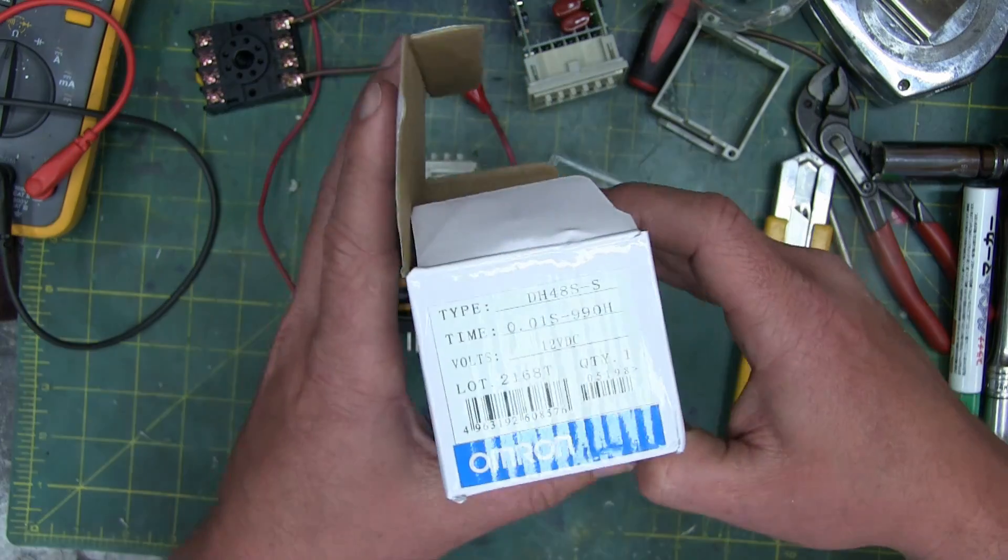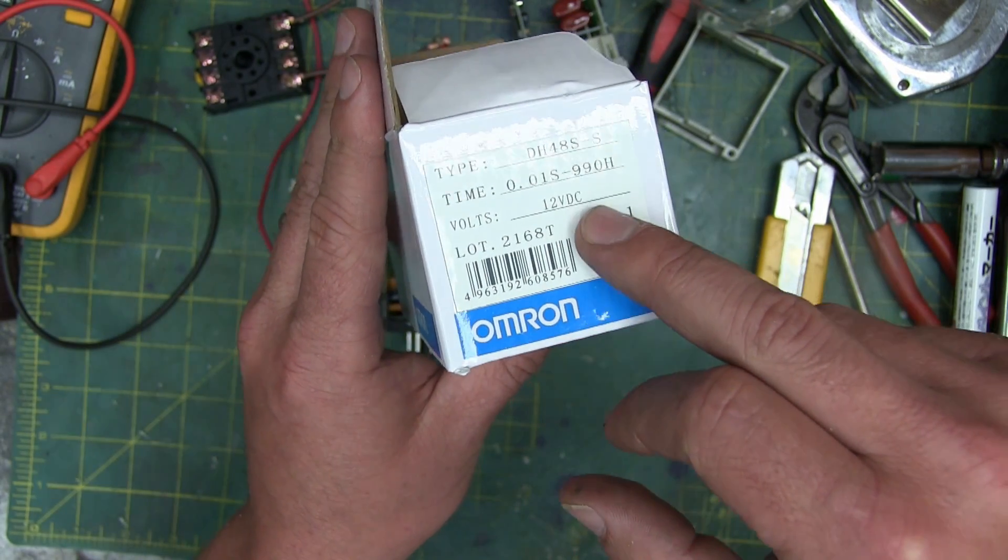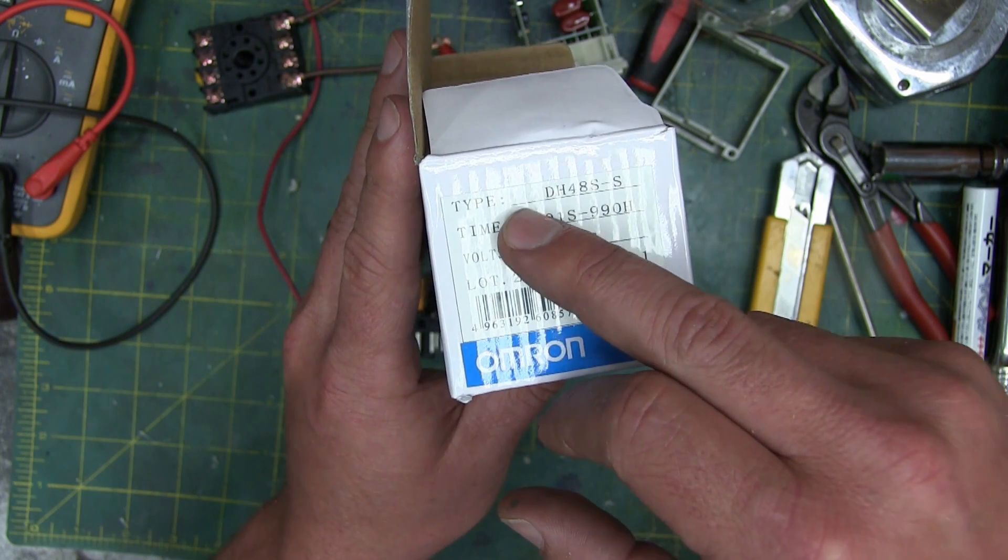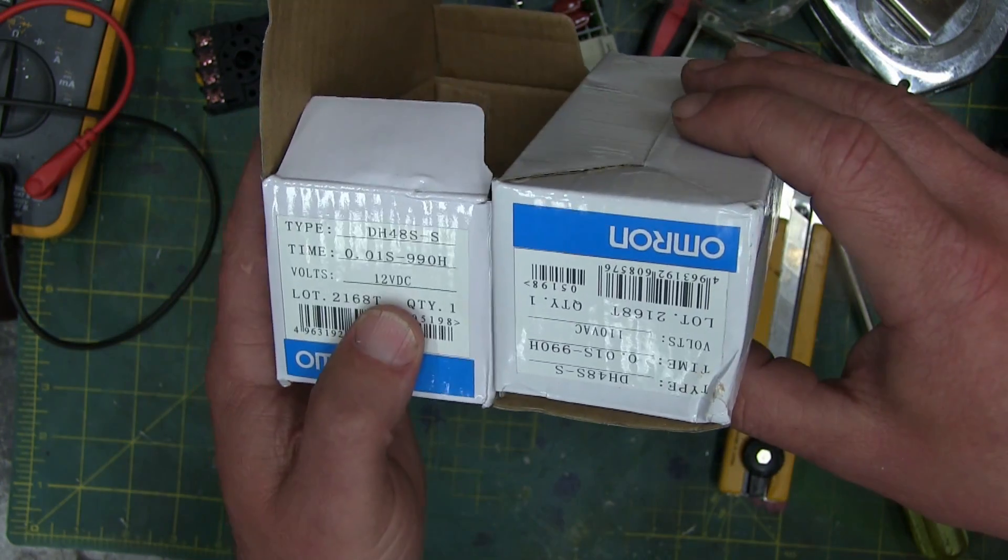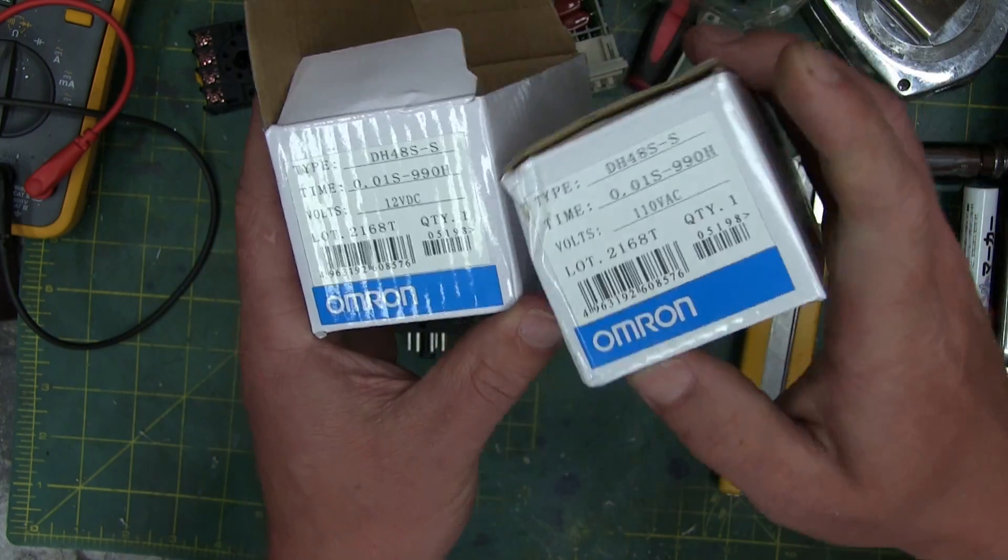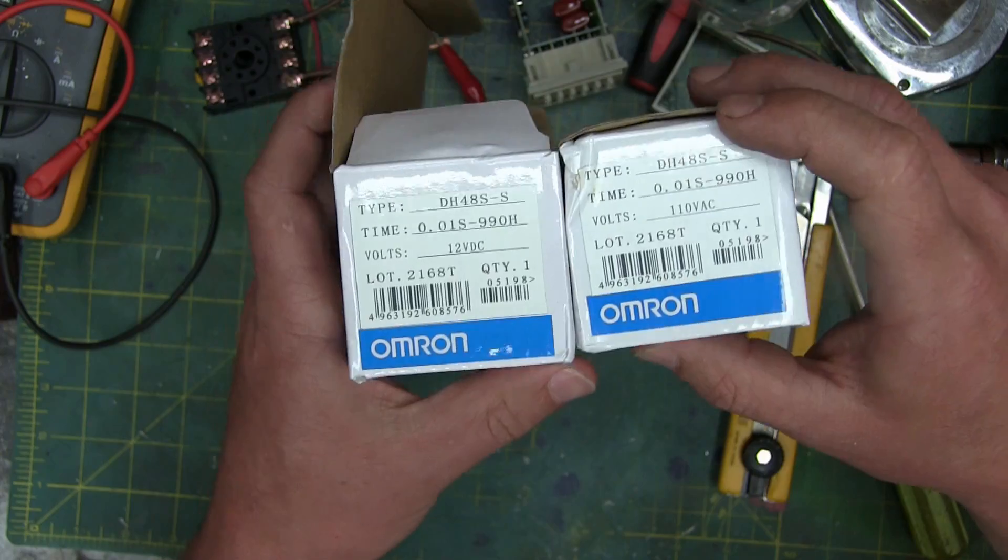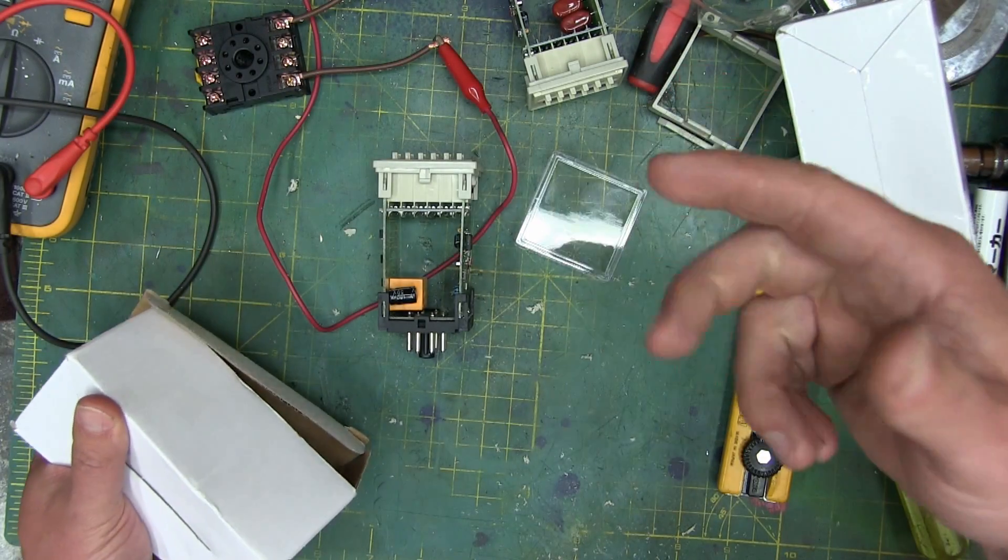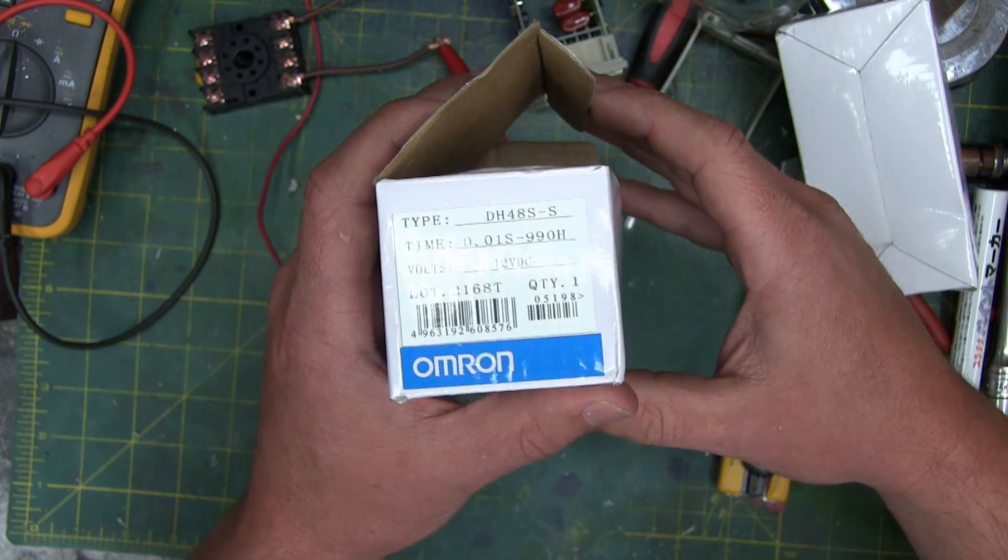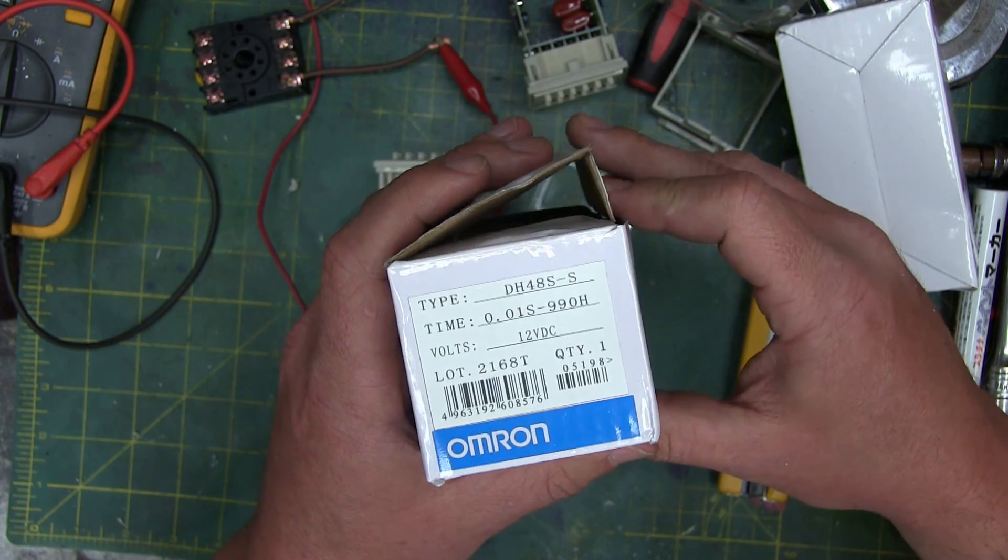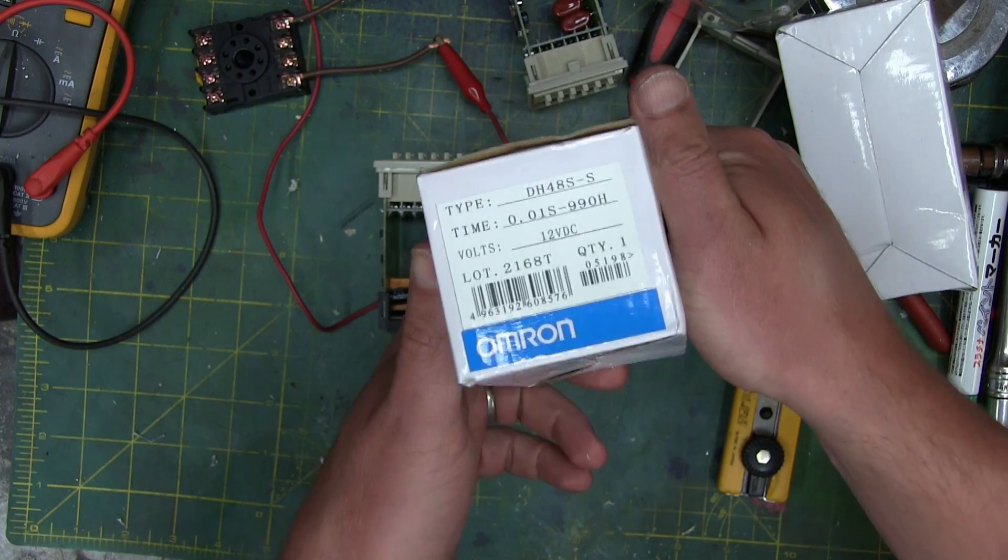These ones, as we can plainly see, let's go over this and have a look. Chinesium font, Times New Roman font, 12 volts DC. I got a 120 volt DC one as well, same lot number. So, smells like shit, tastes like shit, spit it out. These are 10 bucks from the usual suspects. You can tell they're junk.